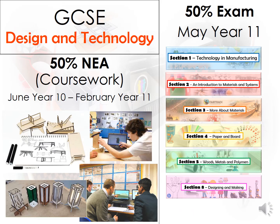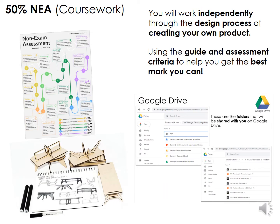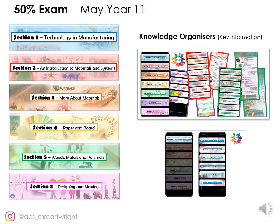It's 50-50 coursework and an exam. The NEA starts in June of Year 10 up until February of Year 11, and we then revise for your exam theory with an exam usually around May of Year 11. For the NEA coursework, you will work independently creating your own product, but you will have a series of detailed guides to take you through every page and every step, with all resources available in Google Classroom. We have an excellent theory structure program throughout, with great resources including knowledge organisers for all topics.